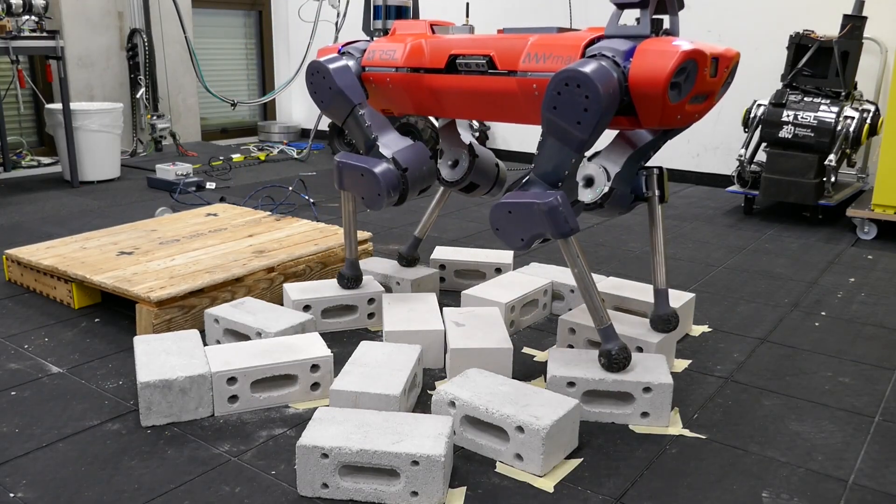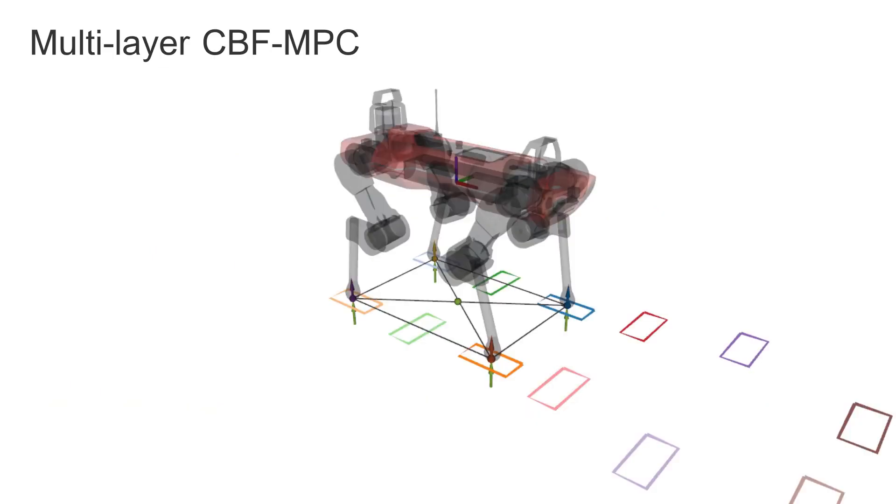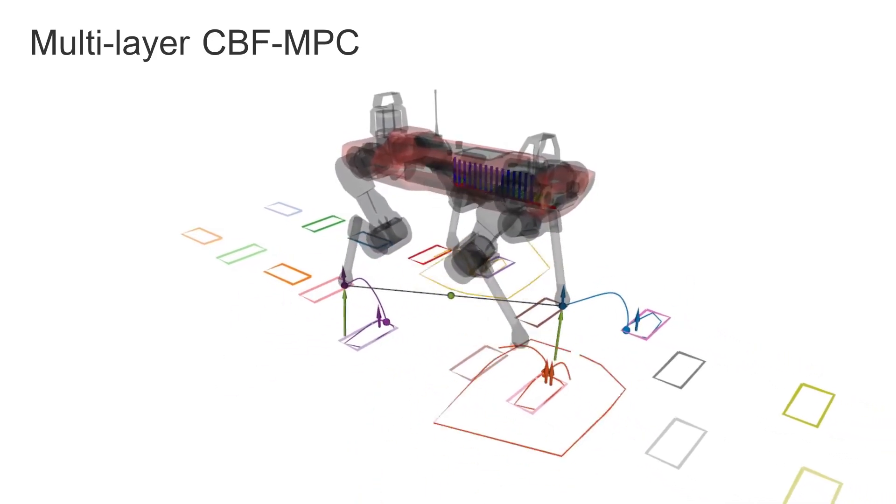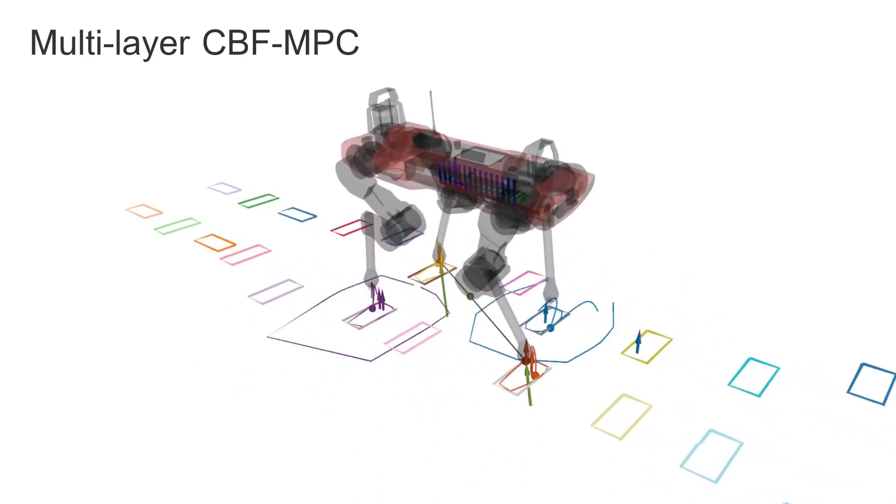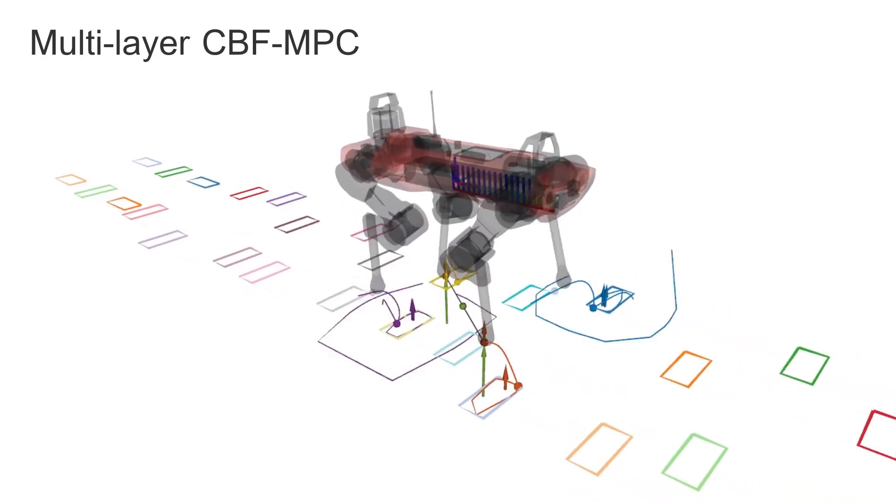We also tested our approach in simulation on a classical scenario where the stepping stones are sparsely spaced in a randomized pattern. An external velocity command and a desired gait pattern are specified by the user, but the rest of the motion follows from the closed-loop execution of the proposed controller.